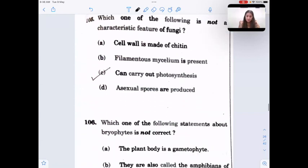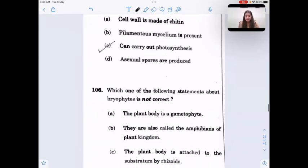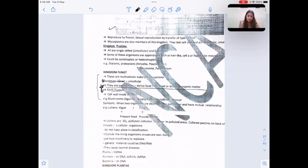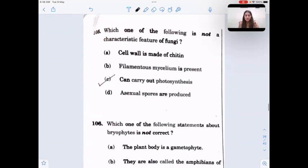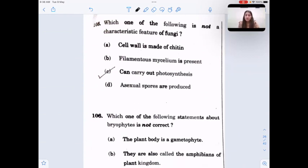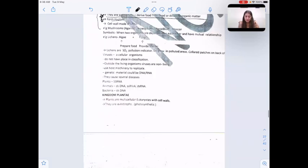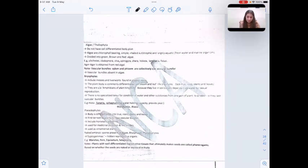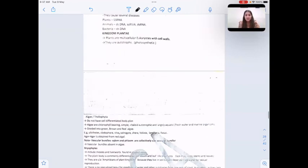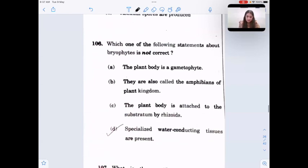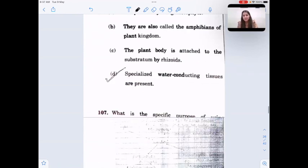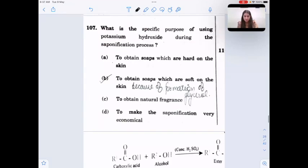Which one of the following is not a characteristic feature of fungi? Some features of fungi are given in notes. Which of the following statements about bryophytes is not correct? Bryophytes, they have no specialized tissue for conduction of water and other substances. So this is the statement which is not true. Specialized conducting tissue are present - they are absent.